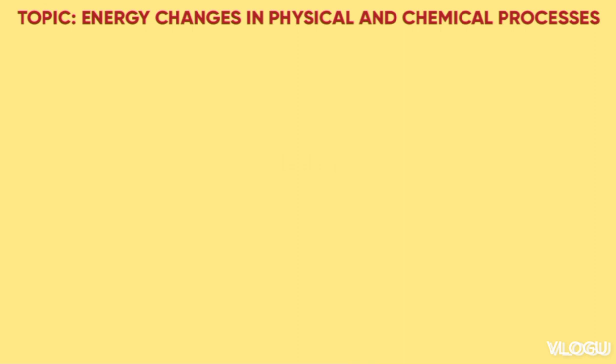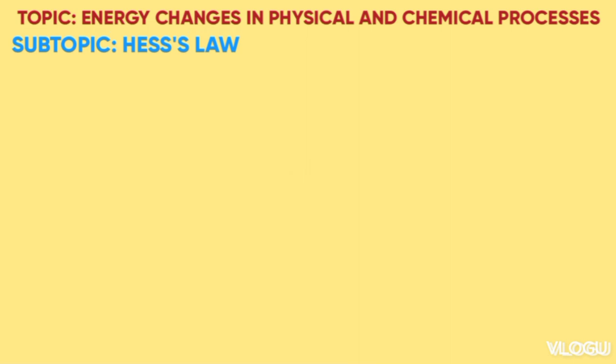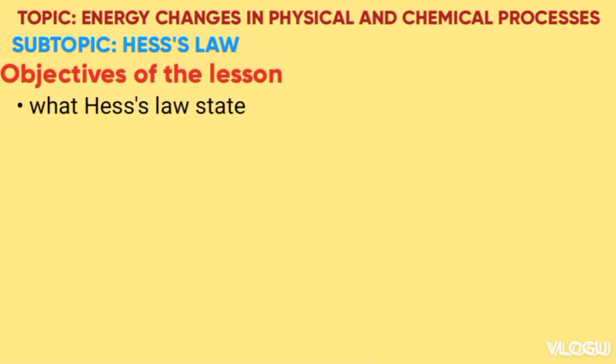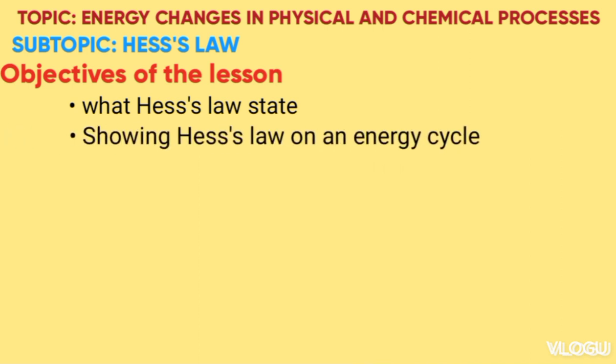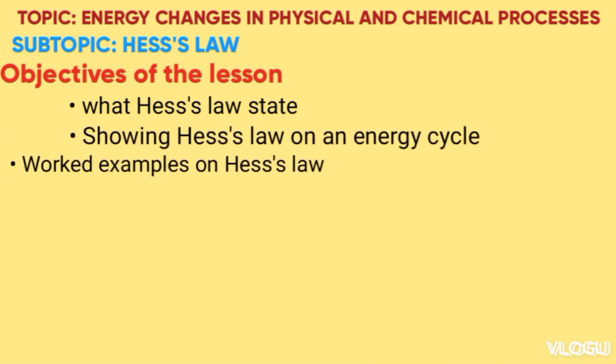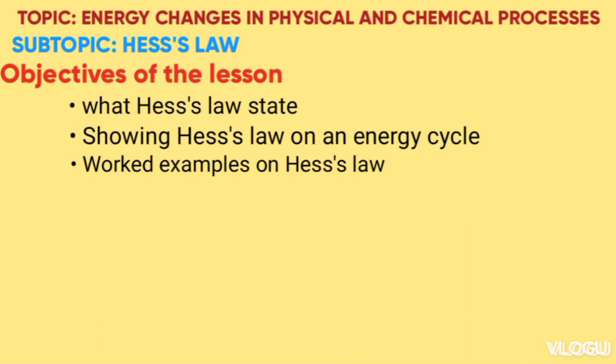In our lesson today we look at the topic of energy changes in physical and chemical processes. The subtopic is Hess's Law. The objective of the lesson is to look at stating the law, showing the law in an energy circle, then examples of calculation involving Hess's Law.